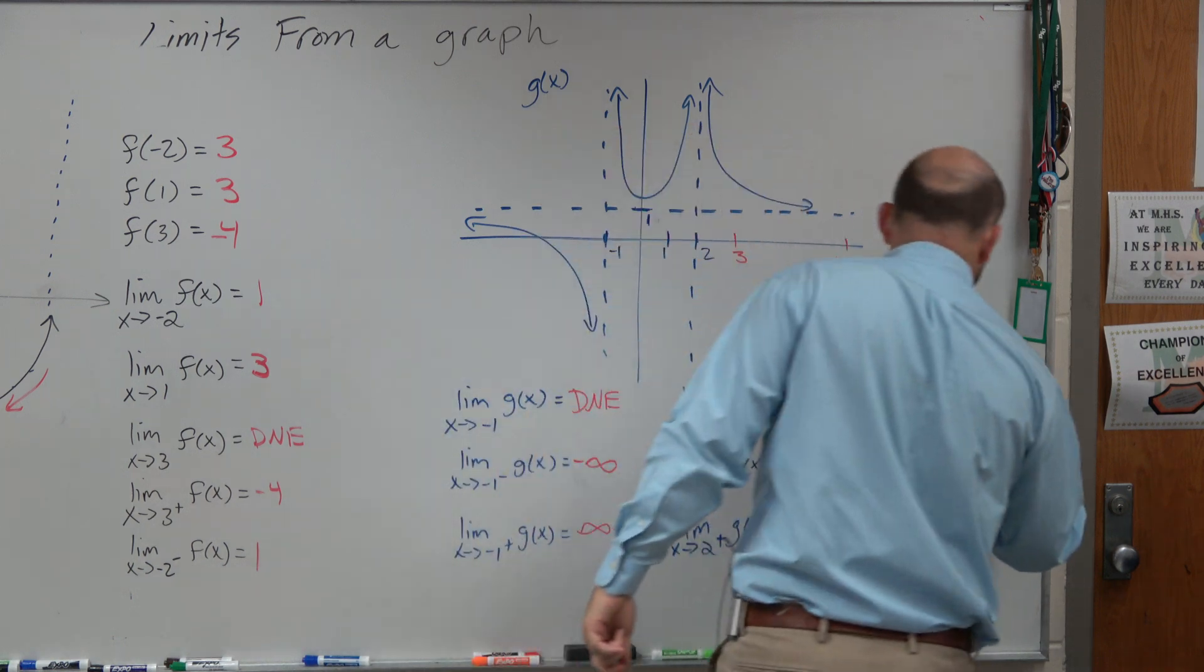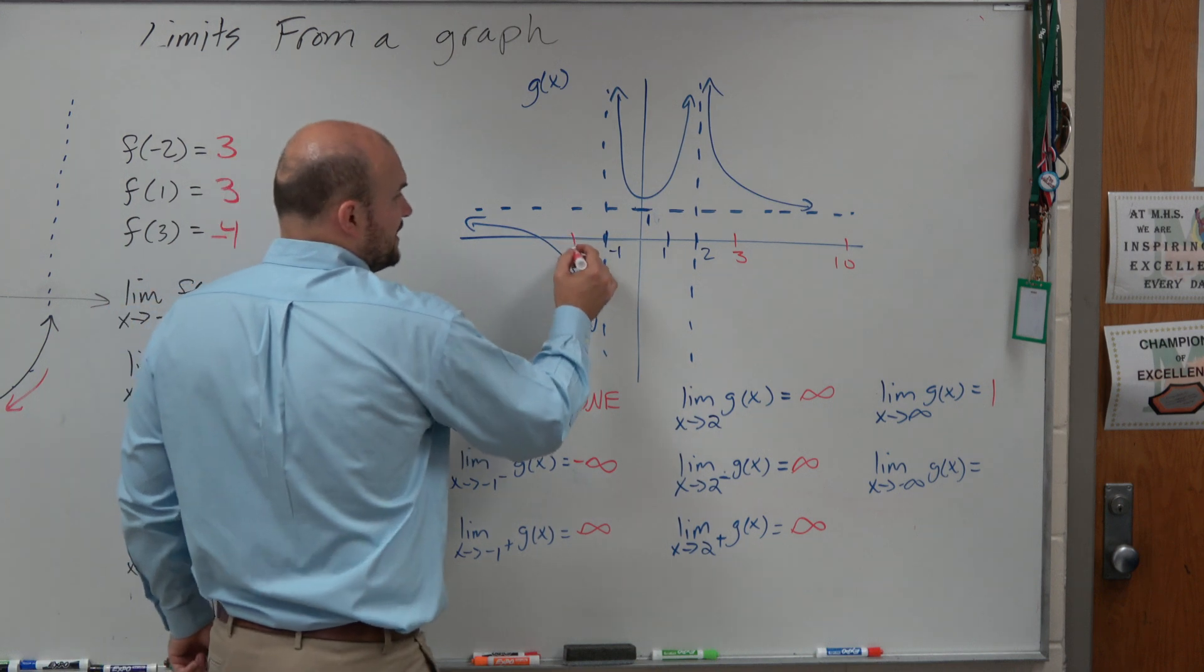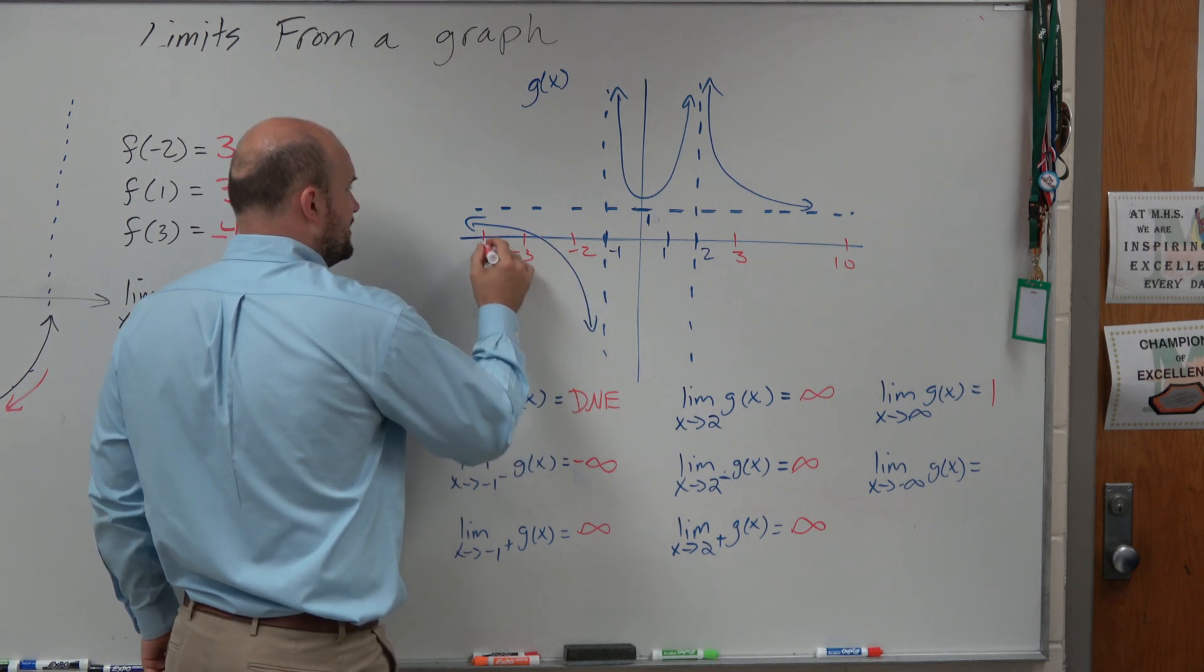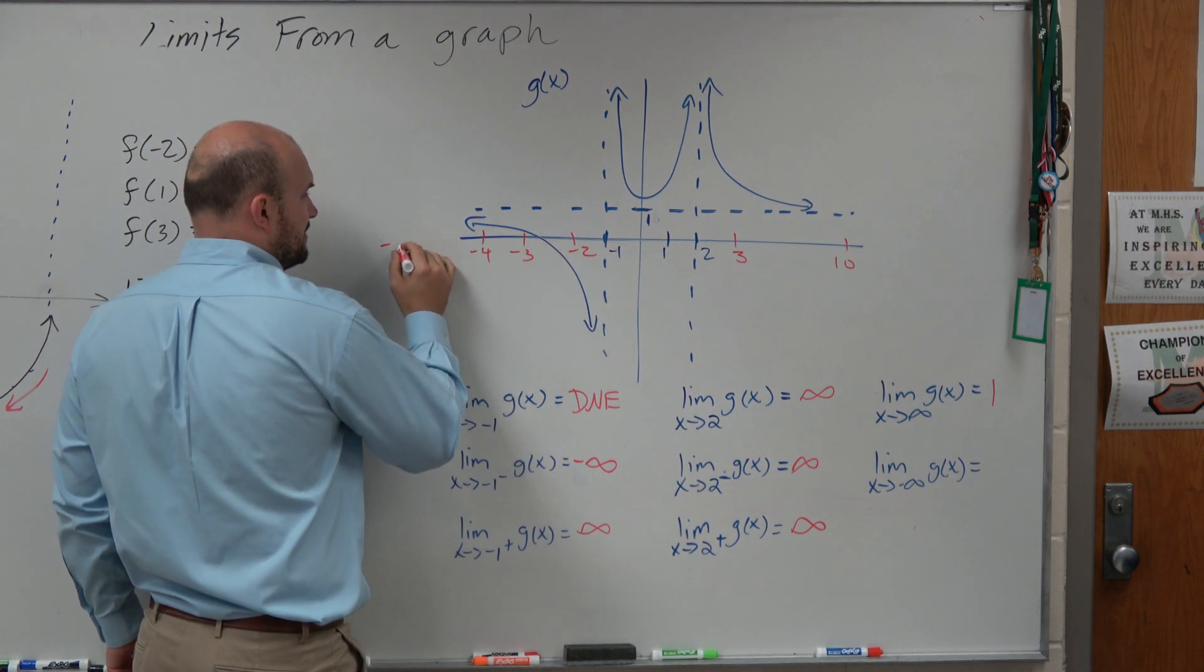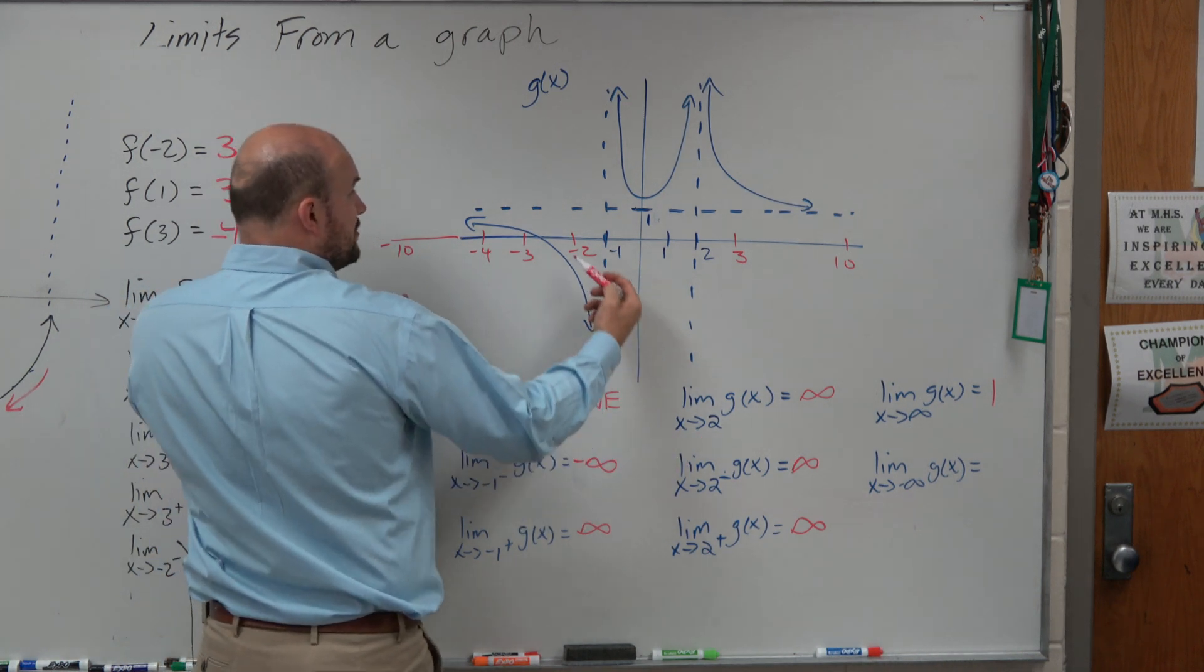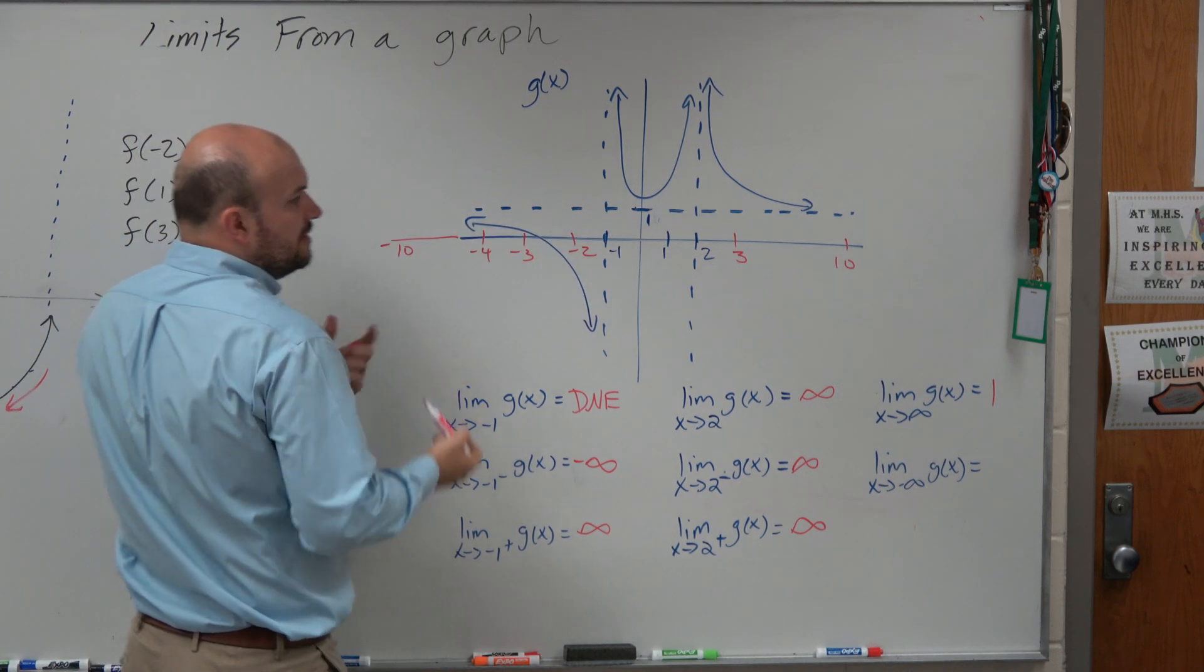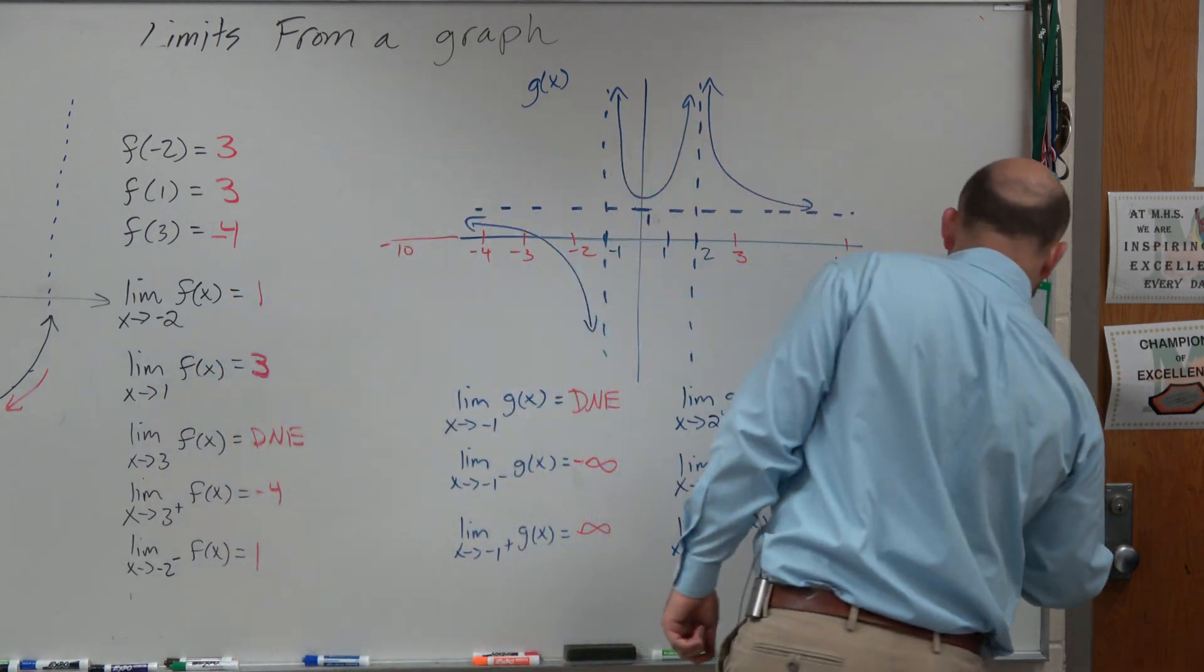So we can say that's the value that it is approaching, is 1. From the left, that means we're getting more and more negative values. So negative 2, negative 3, negative 4, negative 10, whatever. And you can see from the bottom, as we get more and more negative, again, this graph looks like it's approaching this asymptote, which again has a y value of 1.